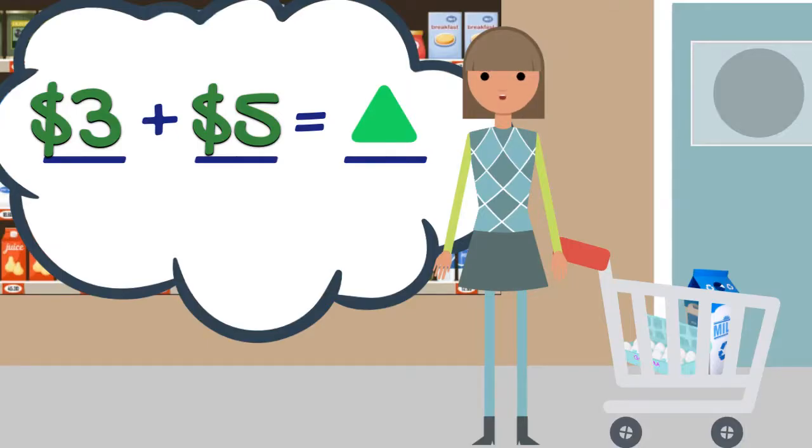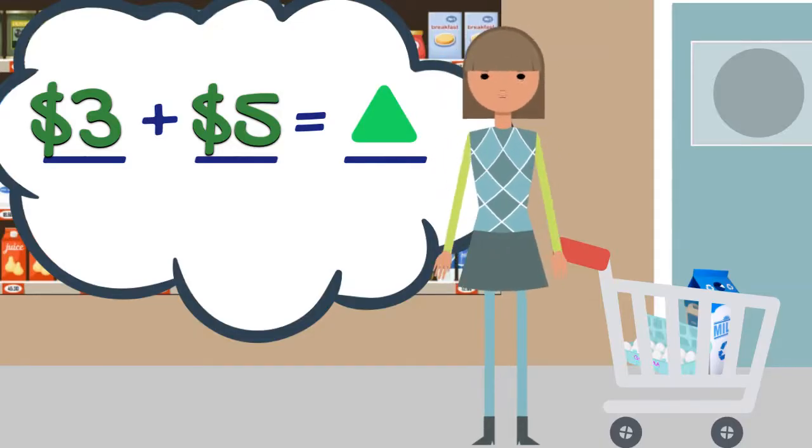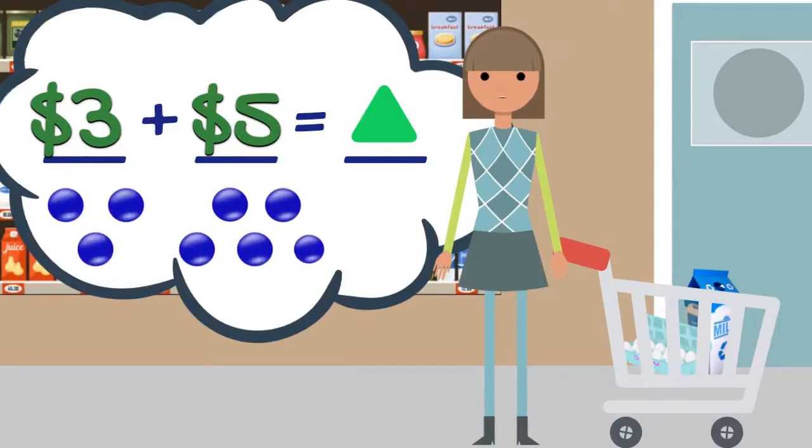We could use many methods to solve problems. Let's use a drawing and count. I will make a circle for each dollar I add. So for the milk, I will draw three circles. For the eggs, I will draw five circles. Now, count them with me to find the total. Ready?